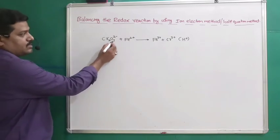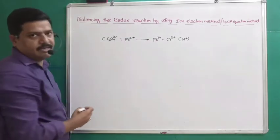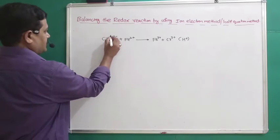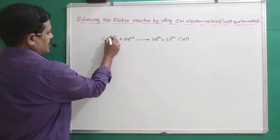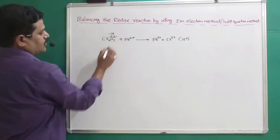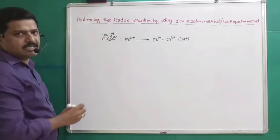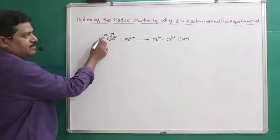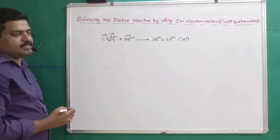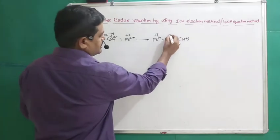Dichromate ion Cr₂O₇²⁻ will oxidize Fe²⁺ into Fe³⁺ in acidic medium. First, we need to assign the oxidation states. The oxidation state of oxygen is −2, and 7 oxygens give −14. For chromium, 2 chromiums' oxidation state should be +12, since the sum of oxidation numbers must equal the charge of the ion: −14 + 12 = −2. For Fe²⁺, the oxidation state is +2, and for Cr³⁺ it is +3.